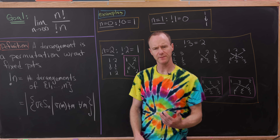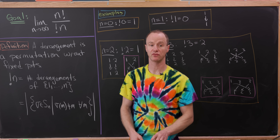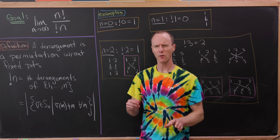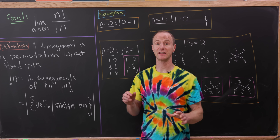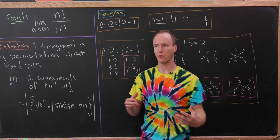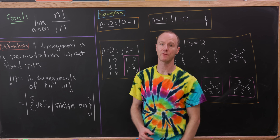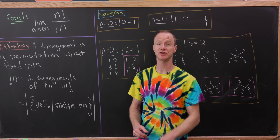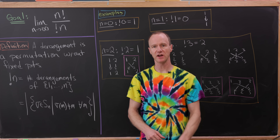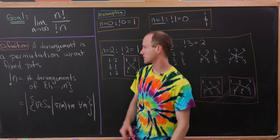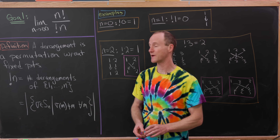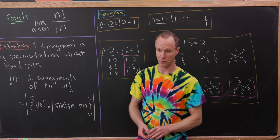Today we're going to talk about something called a derangement of a set. We're going to wrap up what we find out about derangements into a pretty interesting looking limit. So let's look at our definition first. A derangement is a permutation without fixed points.